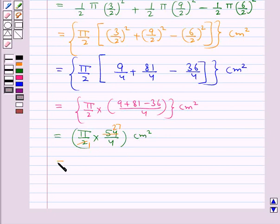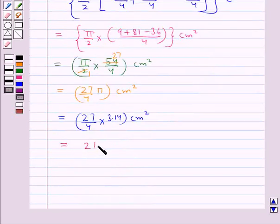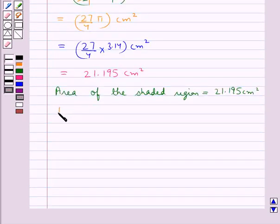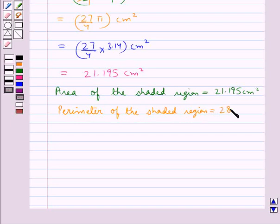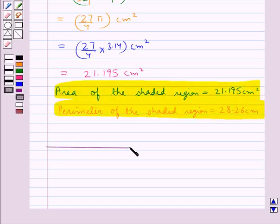This simplifies to 27/4 × π cm². Substituting π equals 3.14, we get (27/4) × 3.14 equals 21.195 cm² as the area of the shaded region. We also found the perimeter of the shaded region equal to 28.26 cm. So this is our final answer. Hope you have understood the solution of this question. This completes the session.